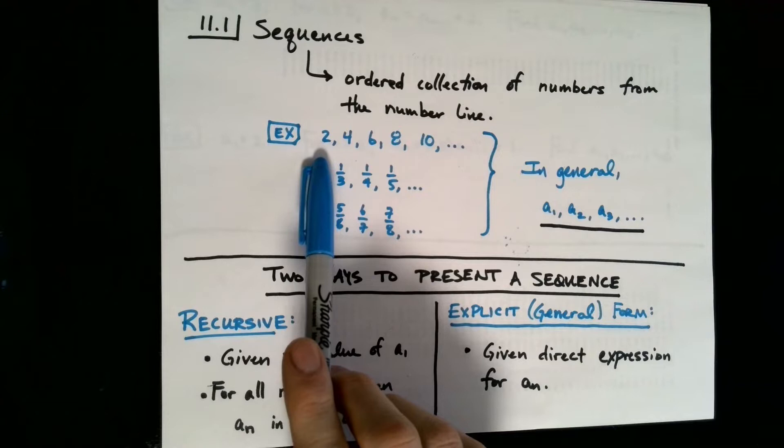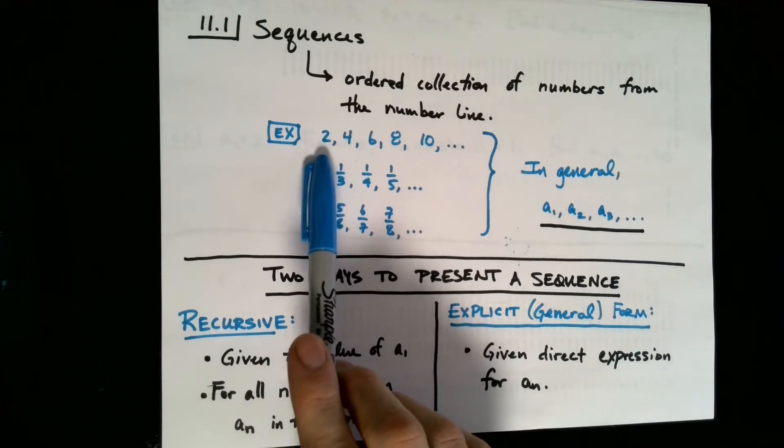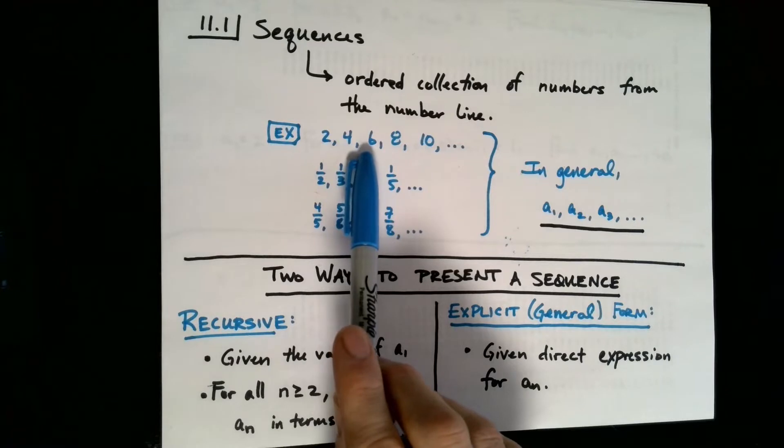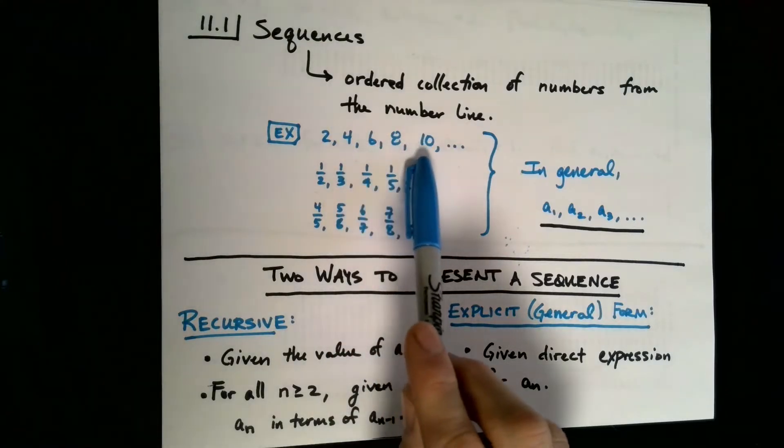Here is an example of a sequence: 2, 4, 6, 8, 10. Why is this a sequence? Well, it's an ordered collection of numbers. There's a first one, 2, there's a second one, 4, a third one, 6, and a fourth one, and a fifth one, and so on.